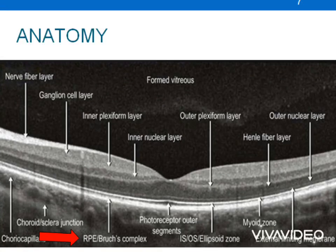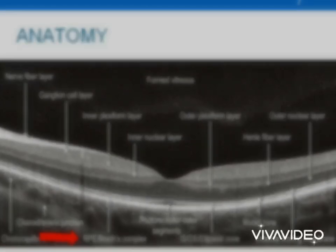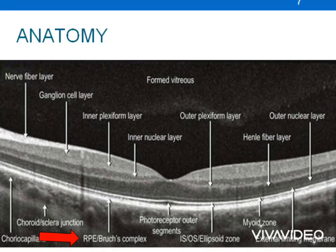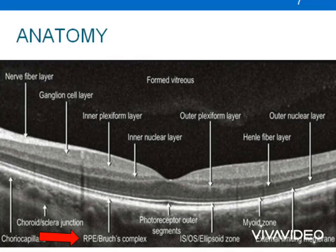Regarding anatomy, retinal detachment is the separation of the neurosensory retina from the underlying RPE layer. These two layers are derived from the neuroectoderm that lines the optic vesicle during embryogenesis. As the optic vesicle invaginates, two layers come in opposition — the inner layer differentiates into the neurosensory retina and the outer into the RPE. There is no real anatomical junction present, so the forces of attachment between the neurosensory retina and RPE are weak, increasing the chances of retinal detachment.